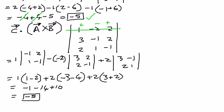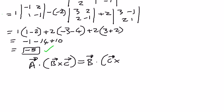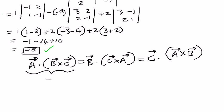All of these values are exactly the same. When we computed A dot B cross C, B dot C cross A, and C dot A cross B, we got the same value each time. Therefore, this property is true: A dot B cross C equals B dot C cross A equals C dot A cross B, and all came out as negative 5. So in my next presentation, we shall look at some more examples related to vector triple products.